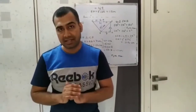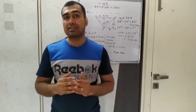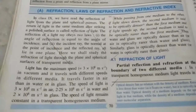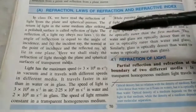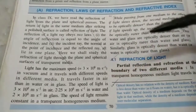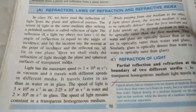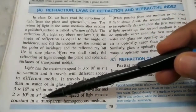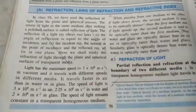Let's study class 10 standard ICSE physics chapter 4: refraction of light, section A — laws of refraction and the refractive index. Light is the fastest thing in the universe; nothing can travel faster than 3 × 10⁸ meters per second, which is the speed of light in vacuum. But the speed of light slows down in different media — in water it's 2.25 × 10⁸ m/s and in glass it's 2 × 10⁸ m/s. Because of this change in speed, the phenomenon of refraction takes place.